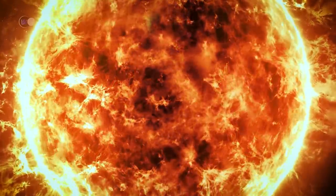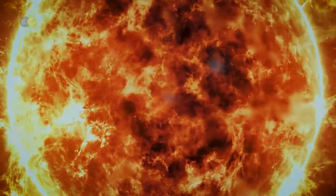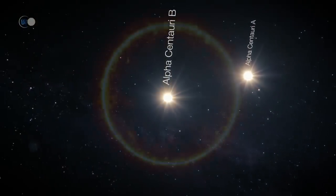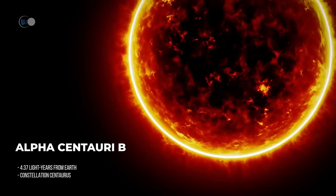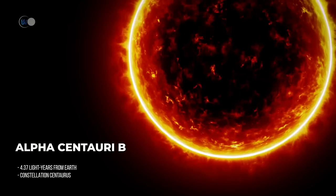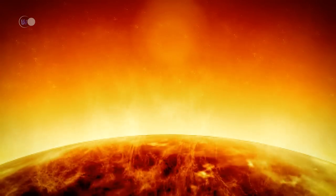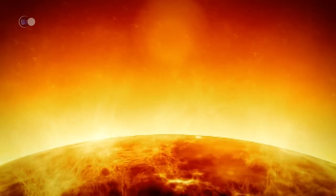Alpha Centauri B, also called Toliman, is slightly smaller and cooler than its companion. The mass of this secondary star is 90% of that of the Sun, and its diameter only 14%. Its luminosity is barely 45% of that of the Sun. Therefore, it has a main sequence of spectral type K, which gives it this more orange color.